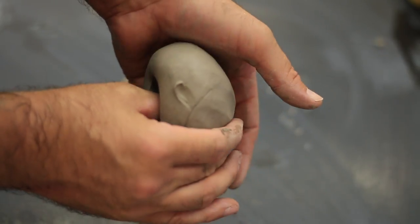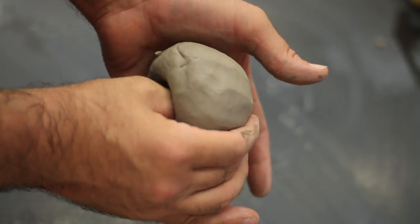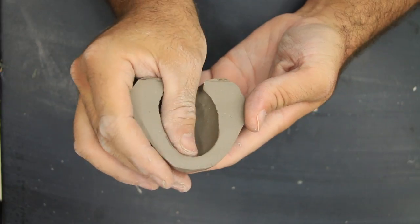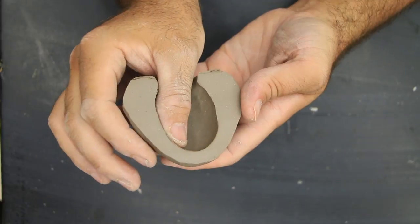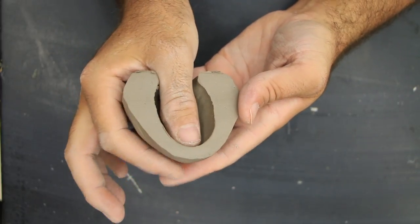Then you want to continue on by pinching the clay between your thumb and your forefinger while rotating the clay with your other hand. See this illustration, how I'm pinching all the way down at the bottom between my thumb and my forefinger?